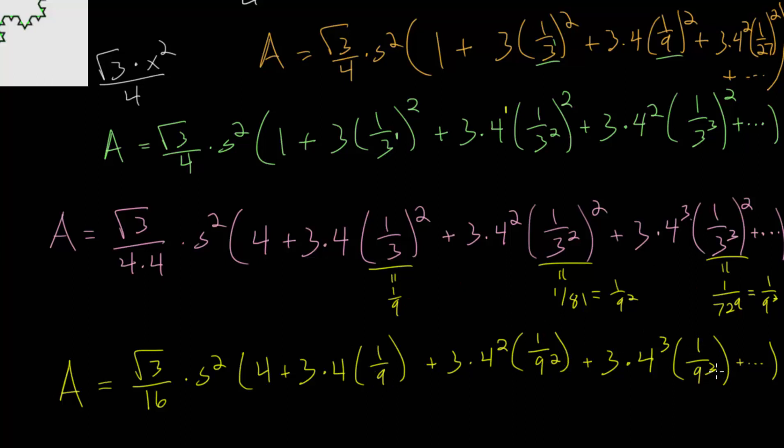1 over 9 squared, 1 over 9 cubed, and notice that the exponents on 9 and 4 match up. And we can rewrite these as their own fractions combined. This one will become 4 over 9. This will be 4 squared over 9 squared, and we can write 4 squared over 9 squared as 4 over 9 squared.